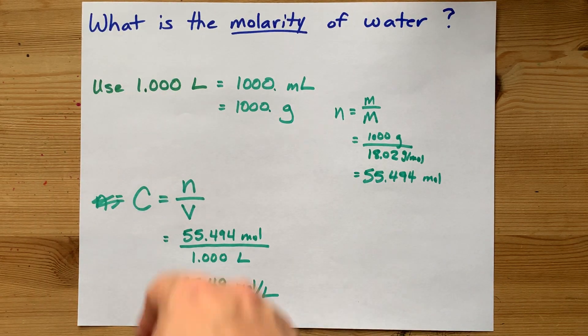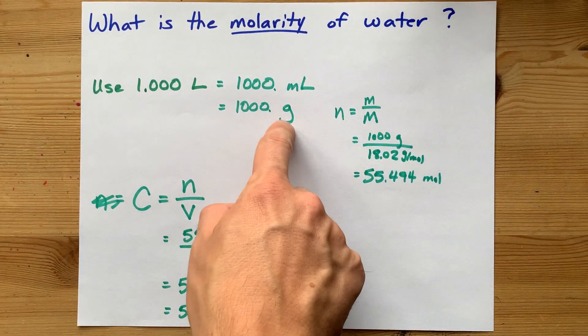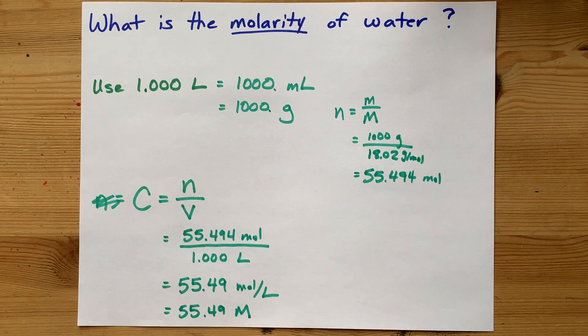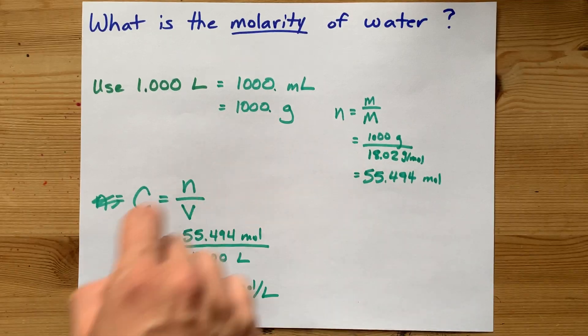Cool. The molarity of water, if your density is one gram per milliliter, is 55.49 moles per liter. Dunzo. Best of luck.